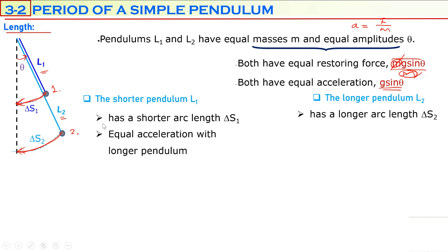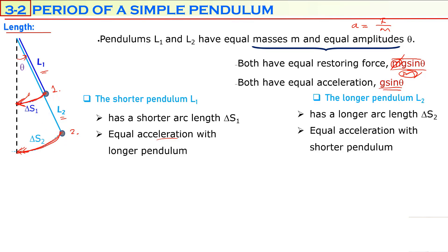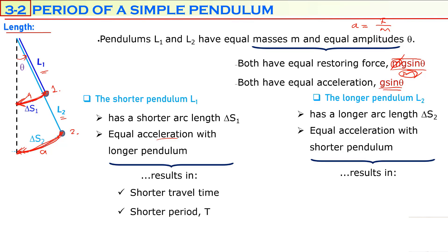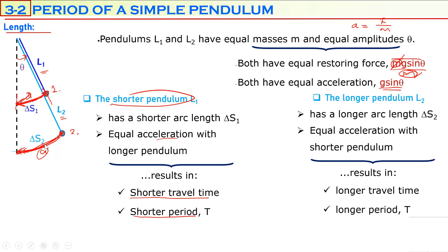Their accelerations are equal, but the shorter pendulum has a shorter arc length and the longer pendulum has a longer arc length. Acceleration tells us how quickly the bob speeds up. That's why the first bob will reach the equilibrium position earlier. The shorter pendulum will travel from one position to the other in a shorter time, giving it a shorter period. The longer pendulum, with a longer arc length, will travel the same distance in a longer time, giving it a longer period.